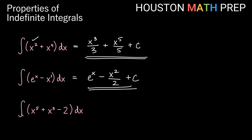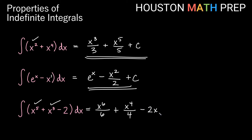Looking at the last one here, we have the antiderivative of x to the 5th plus x cubed minus 2 with respect to x. Power rule for x to the 5 gives x to the 6 over 6. Plus x cubed: adding 1 to the power gives x to the 4 over 4. For the constant negative 2, thinking of it as negative 2x to the 1 and applying the power rule gives negative 2x. Dividing by 1 doesn't change anything, so we get plus c.